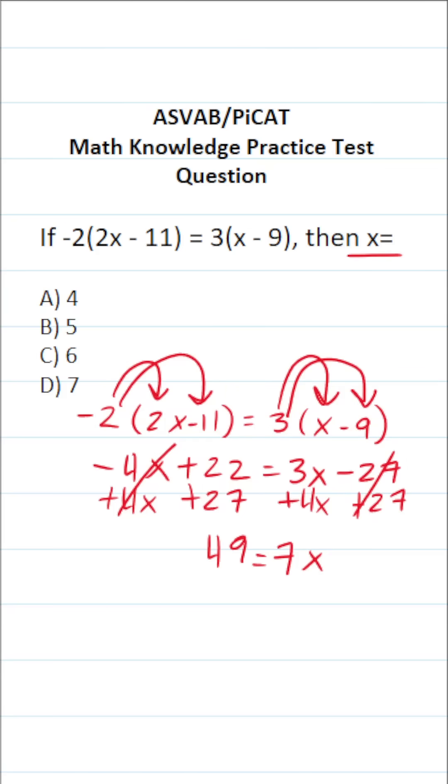We want to get x equal to something by itself. So the next thing we're going to do is divide both sides of the equation by 7. This says x equals 49 divided by 7, which is 7. So x equals 7 in this case. The answer to this one is D7.